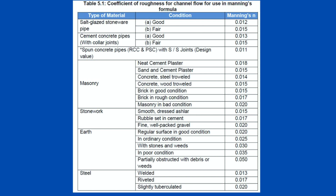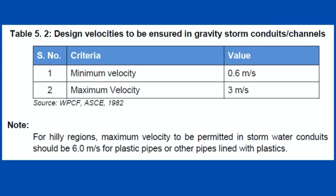In a gravity system, the minimum velocity is 0.6 meters per second and the maximum velocity is 3 meters per second. The minimum velocity is taken as the self-cleaning velocity, and the maximum velocity of 3 meters per second is set to control erosion of the drain and to control the flow of water.